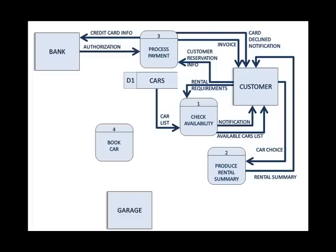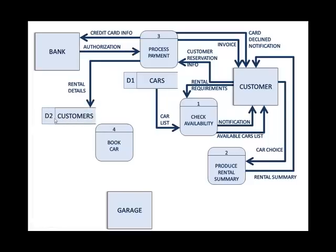Assuming the card was accepted, we move on to process four: book the car. To book the car, I need information from the payment process. Since we already took the customer's money, I will send the rental details along with the customer information and save it in the customer data store, D2.